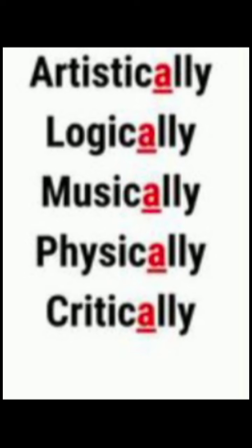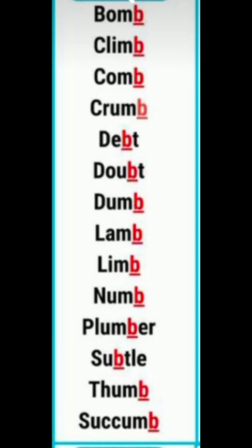Silent A — it is a basic vowel. Whenever you find A before a double L followed by Y, it means you should keep the letter A mute and only pronounce it by keeping it silent. Examples: artistically, logically, musically, physically, critically.